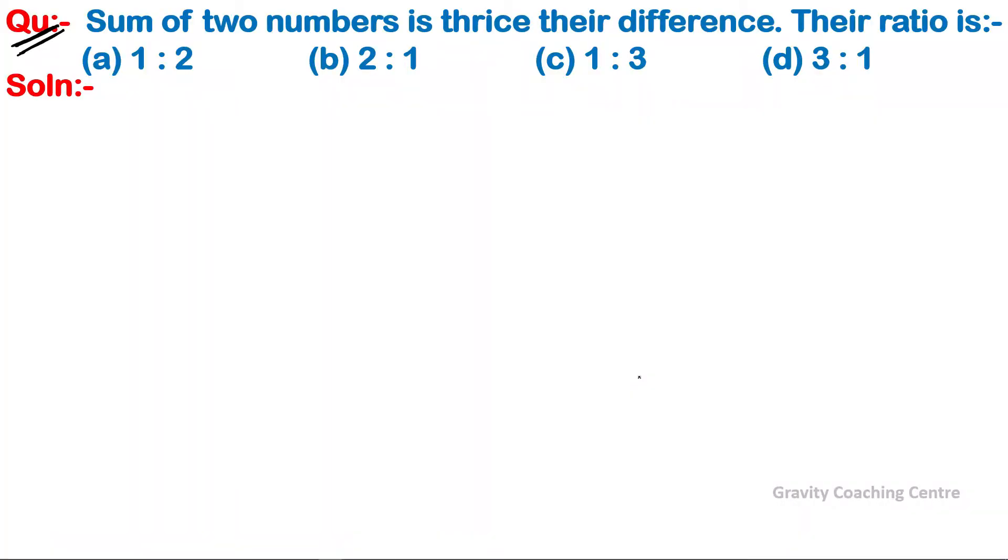Question: Sum of two numbers is thrice their difference. Their ratio is? The sum of two numbers is three times their difference. We need to find the ratio of these two numbers. So first of all, we let the two numbers be